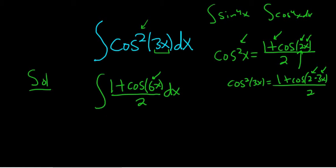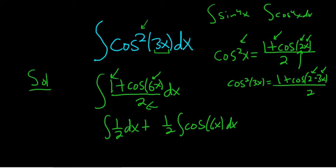Now just break it up so it's 1 over 2 dx plus 1 over 2 cosine 6x dx. Right? It's just 1 over 2 and then cosine 6x over 2. We did that here. I pulled out the 1 half and put it in the front.